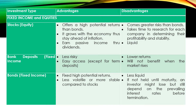For bank deposits, the advantages are: less risky, and easy access — except for term or time deposits. The disadvantages are lower returns, and it will not benefit when the market rises. For bonds, the advantages are: it has fixed high potential returns, and it is less volatile and more stable compared to stocks. The disadvantages are: it is less liquid, and if not held until maturity, an investor might incur losses, depending on the prevailing interest rates before termination.